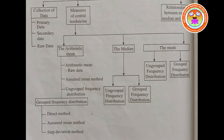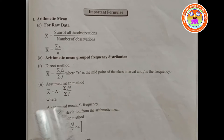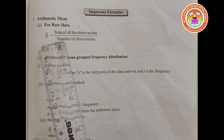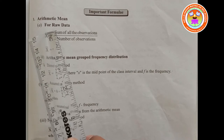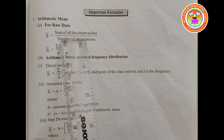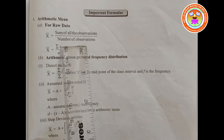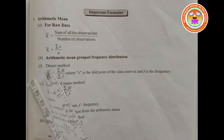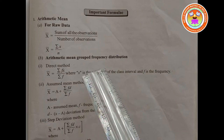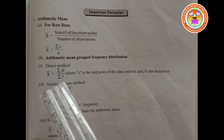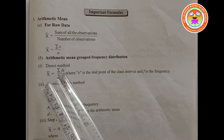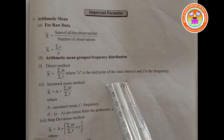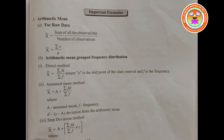Let us see children. Now the important formulas you are going to learn. Arithmetic mean — first one for raw data: sum of all observations by number of observations, x̄ = Σx / n. And arithmetic mean for grouped frequency distribution, direct method: x̄ = Σfx / Σf, where x is the midpoint of the class intervals and f is the frequency.